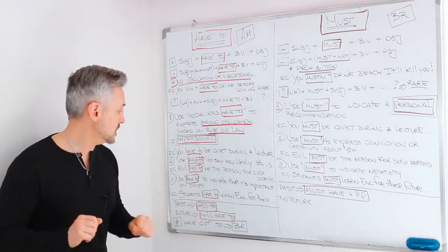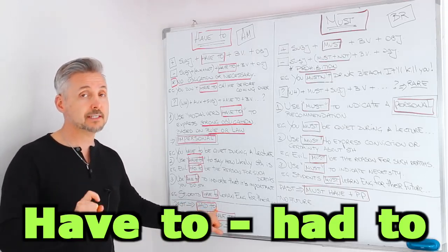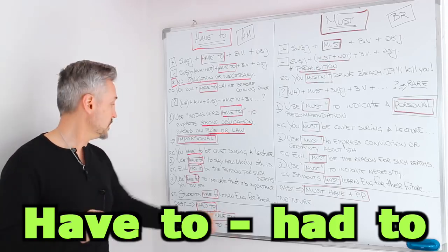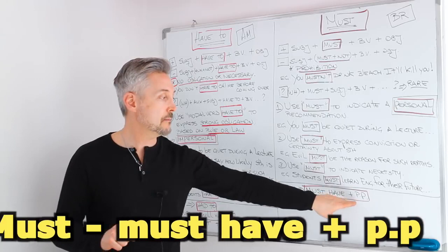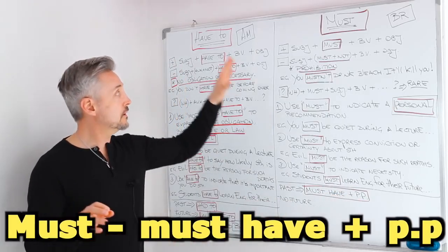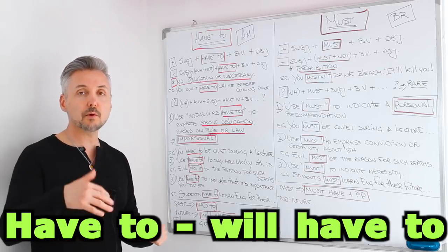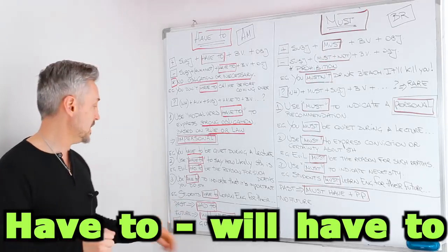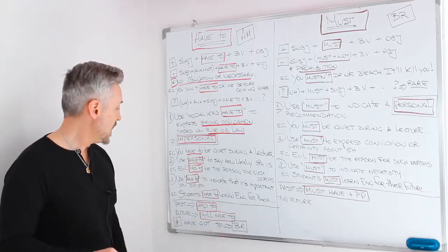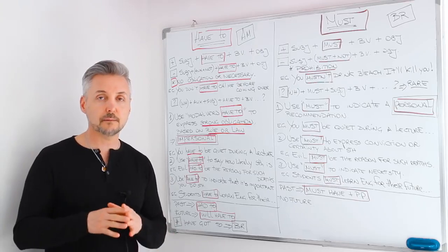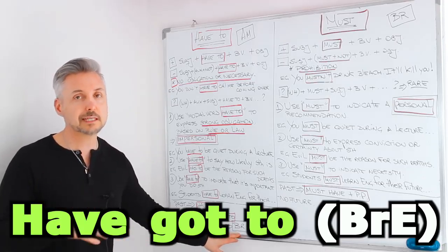They can both be used with the past. The past of 'have to' is 'had to' — remember that for questions or negative sentences you need 'did' for the past. If you use 'must' with the past, it would be 'must have' plus past participle. For the future with 'have to,' we have 'will have to' — for example, 'I will have to do something next week.' For 'must,' we don't have a future form, so we use 'have to.' Also, in British English you can use 'have got to' instead of 'have to' — it's the same thing.